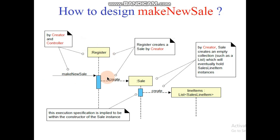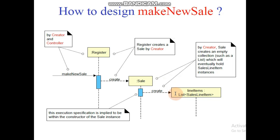How to design makeNewSale: we have a Register object and the message is makeNewSale, driven by creator and controller patterns. Register creates a Sale by creator — following the creator pattern, the Sale object is created by Register. Then the sale creates line items. By creator, Sale creates an empty collection — a list — to hold SalesLineItem instances.